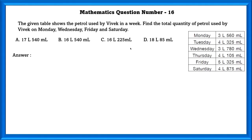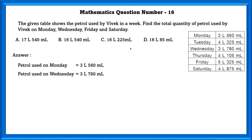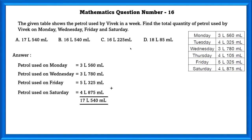Mathematics question number 16. The given table shows the petrol used by Vivek in a week. Find the total quantity of petrol used by Vivek on Monday, Wednesday, Friday and Saturday. Petrol used on Monday plus Wednesday plus Friday plus Saturday equals 17 liters 540 ml.